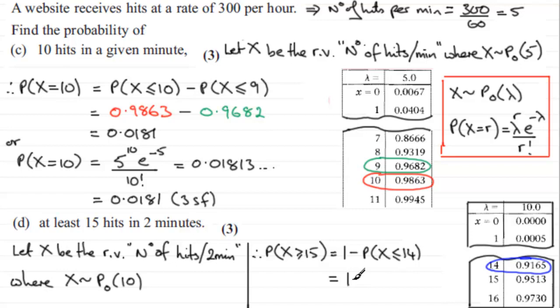So this gives us 0.9165 of the probability of being less than or equal to 14. So we've got 1 minus the 0.9165. And if we work that out, you end up with 0.0835.